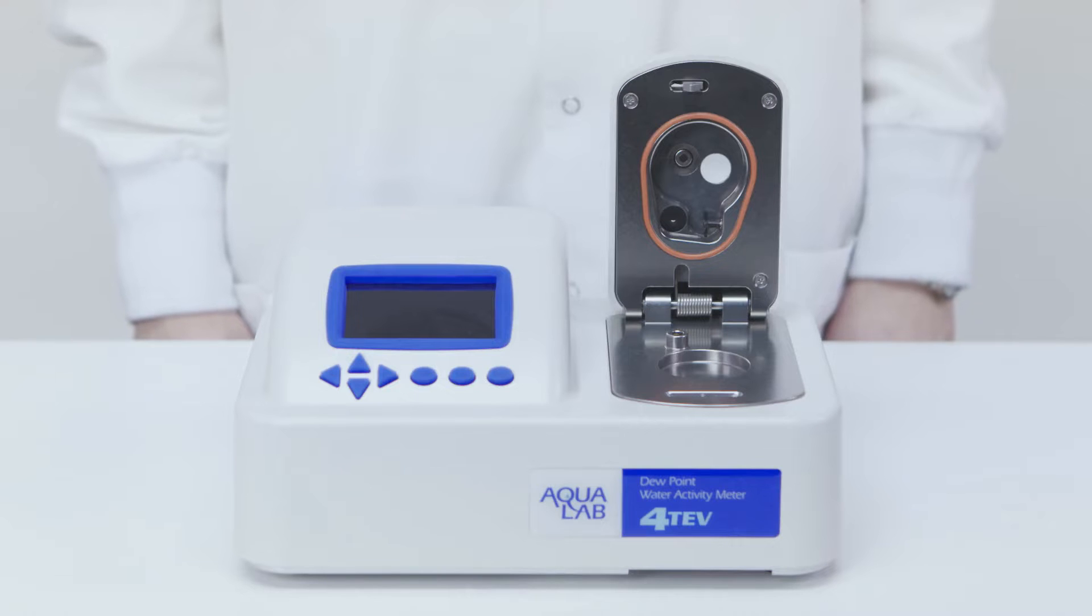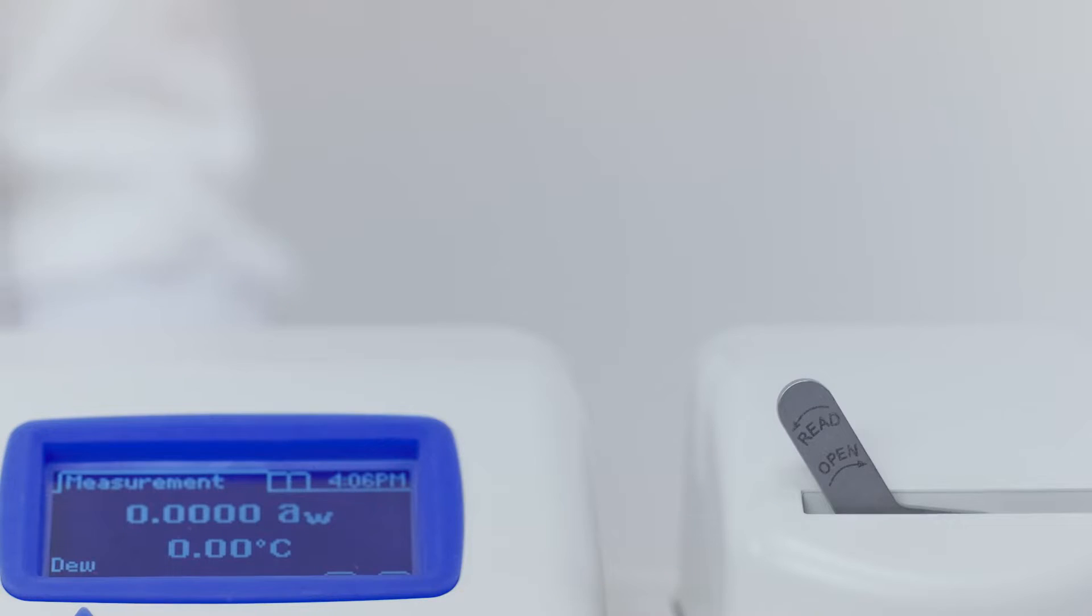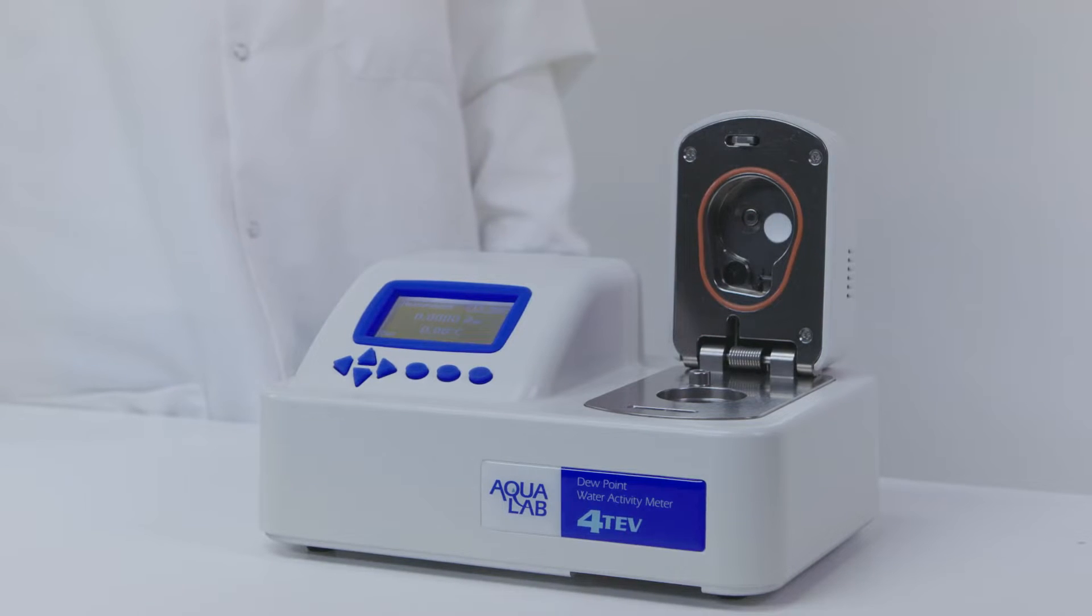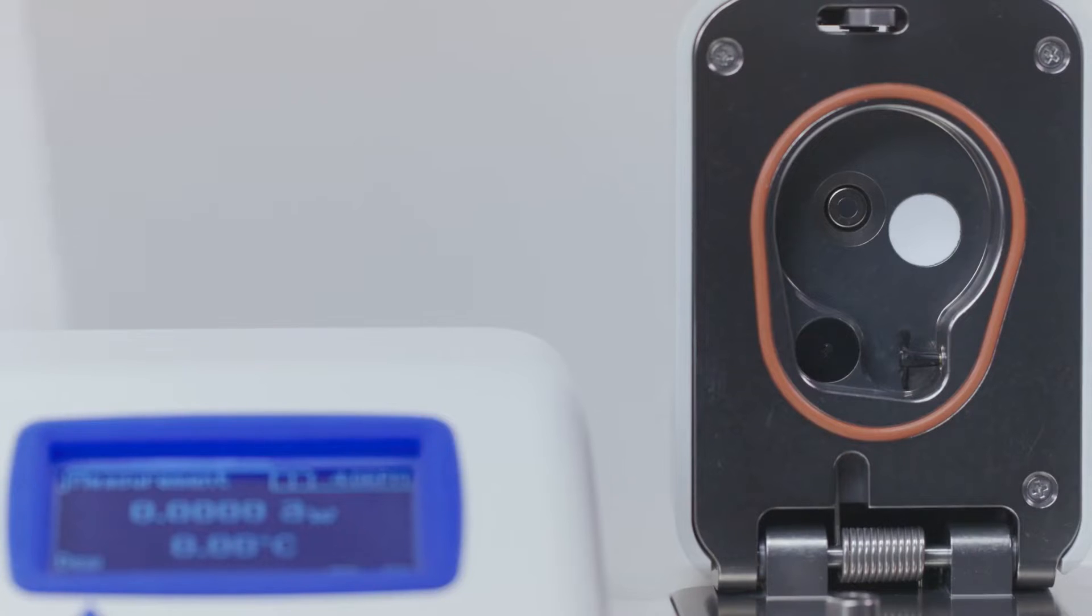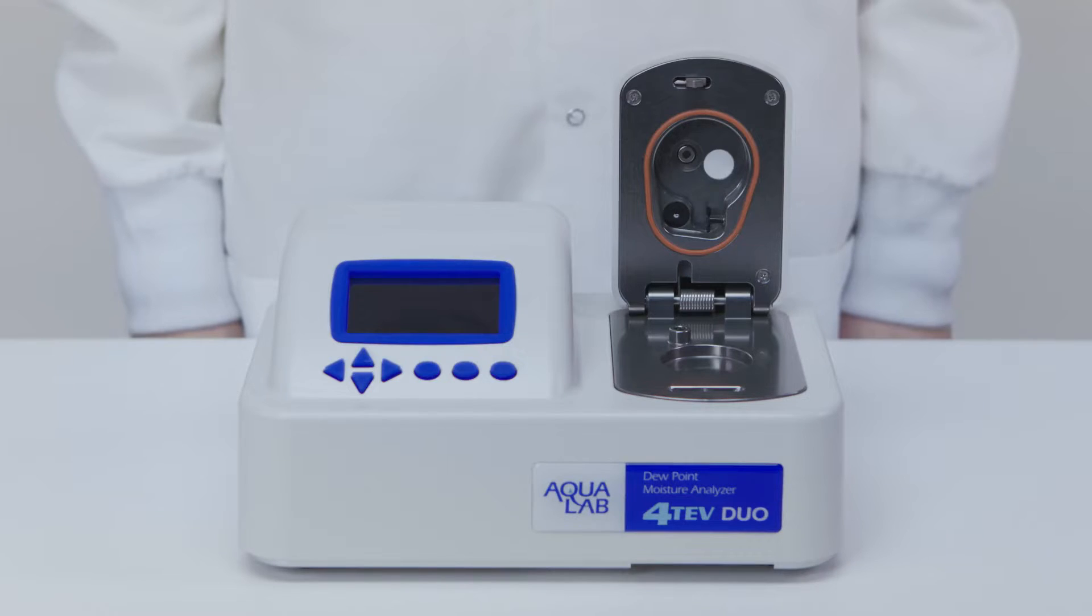The Series 4 TEV features a capacitance sensor alongside the chilled mirror sensor. The capacitance sensor is a secondary measurement method. It's good enough for many situations, but not on the same level as the dew point and tunable diode laser sensors. The Series 4 TEV lets you choose the sensor you want, using the higher accuracy dew point sensor most of the time, and the capacitance sensor for samples that have volatiles in them.